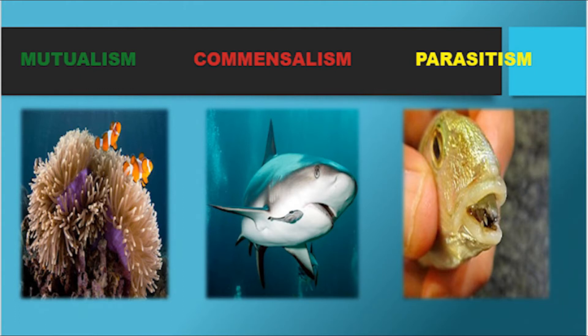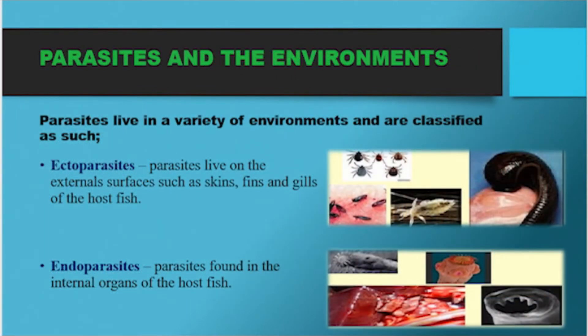Under parasitism, as you can see in the picture, is a parasite living on the tongue of a fish. This means one organism benefits while the other organism is being harmed. Ectoparasites are outside the body of the fish — they live on the skins, fins, and gills of the host fish — while endoparasites are found inside the body of a fish, on the internal organs.